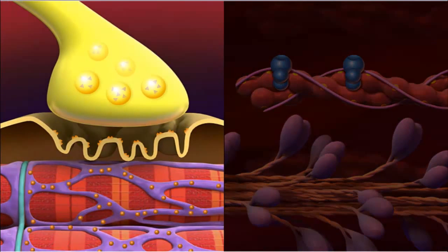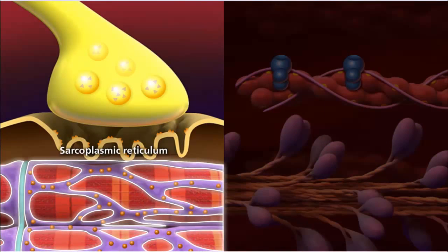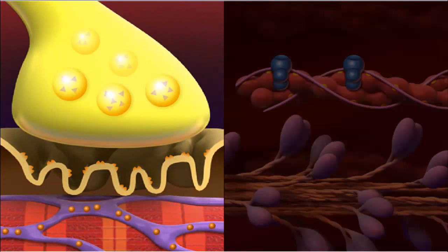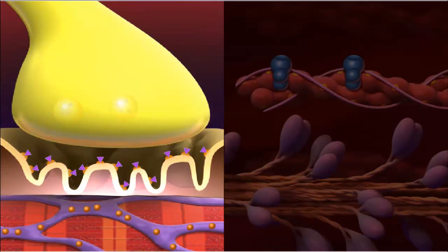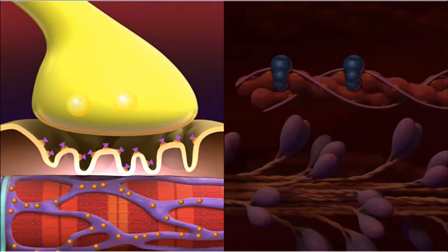Calcium ions are stored in the sarcoplasmic reticulum and are released in response to signals from the nervous system to contract. Neurotransmitter molecules are released from a neuron and bind to receptors, which depolarizes the membrane of the muscle fiber.